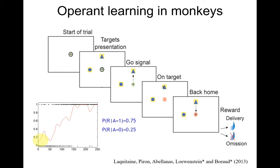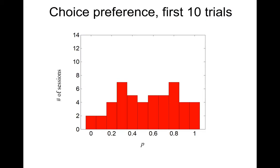Questions? Yes. So these are the biases measured as choices in the first 10 trials. One would correspond to choosing the better alternative exclusively; zero would correspond to choosing the less rewarding alternative. The distribution is wide. There is some bias in the direction of one, corresponding to some understanding within 10 trials of which side is better, but the distribution is much wider than expected by chance.